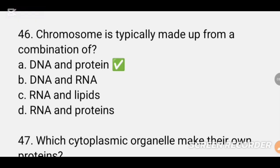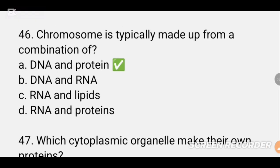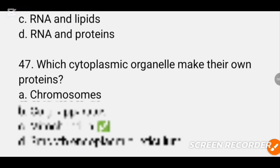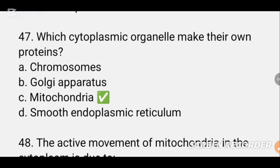MCQ number 46. Chromosomes are typically made from a combination of DASH — proteins and DNA. Option A. Chromosomes are 60% protein and 40% DNA. MCQ number 47. Which cytoplasmic organelles can make their own proteins? The answer is mitochondria. Option C.